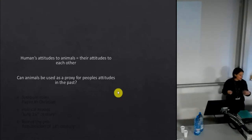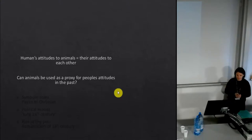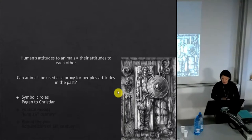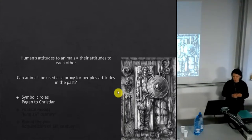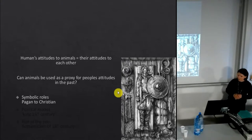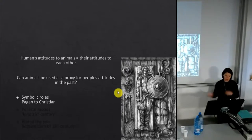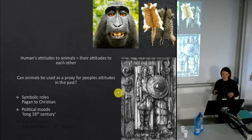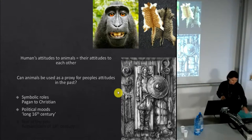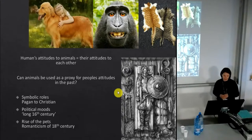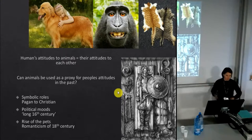Starting from that question, I've done research and come up with three case studies. The first looks at symbolic roles animals play, particularly the change from the pagan Saxon period to the Christian medieval period. The second looks at political moods, focusing on the long 16th century. The third examines the rise of pets, looking at 18th-century Romanticism and bringing us up to the modern day.